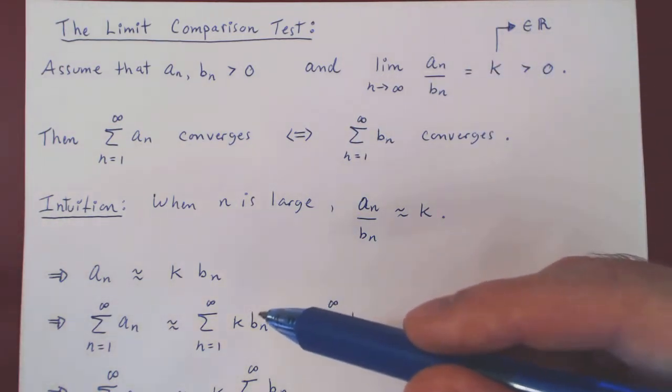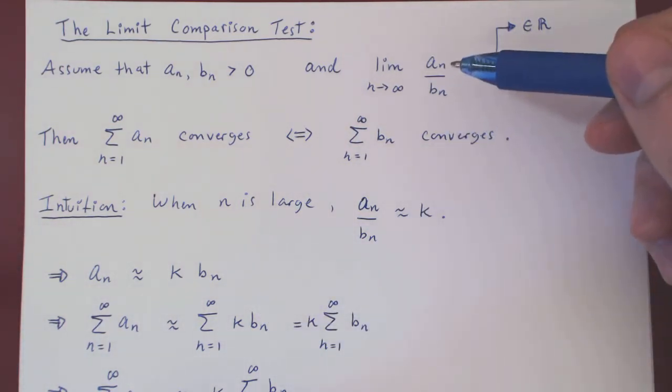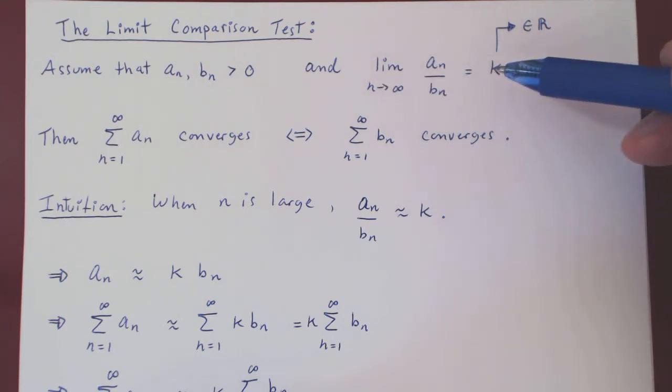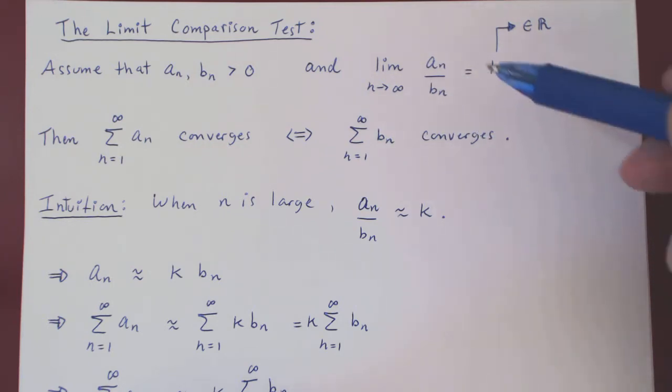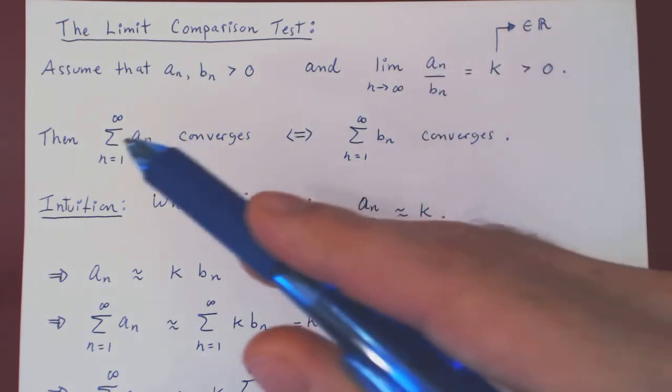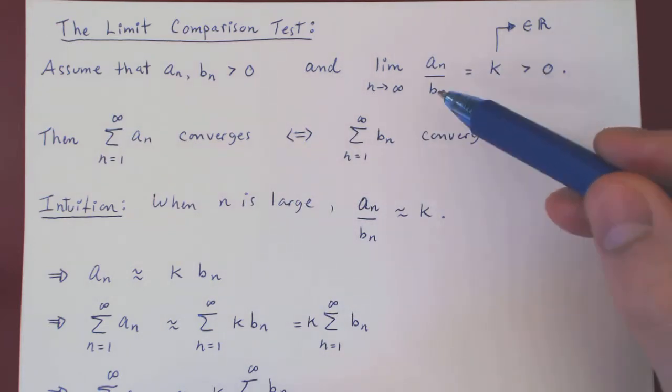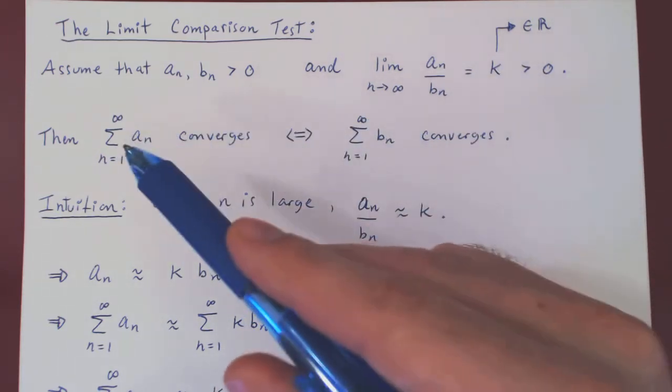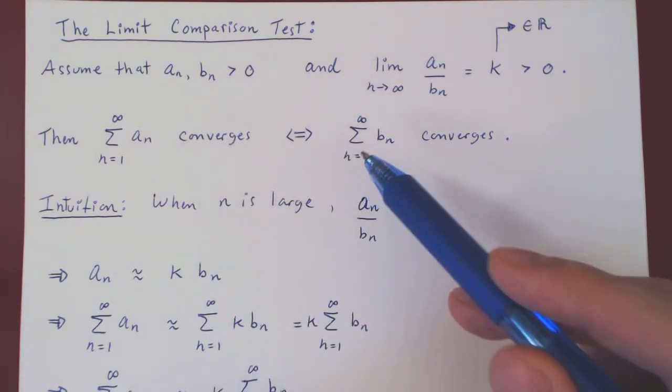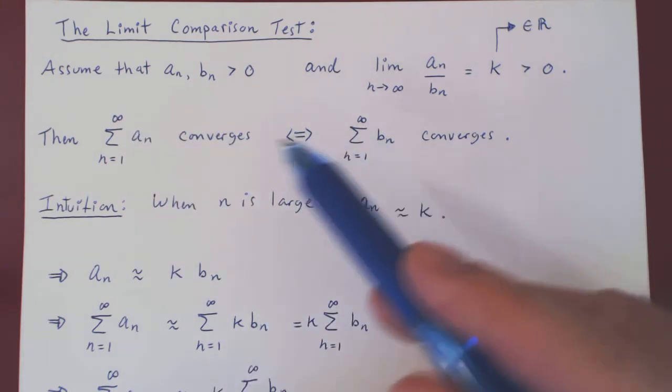Instead of the proof that we will present in the next video, you're saying, when n is large, an over bn is roughly k, so an is roughly k times bn. So summing the an's will be roughly just a multiple of the sum of the bn's. So they have to be roughly of the same order of magnitude. So they are either both finite, or both infinite.